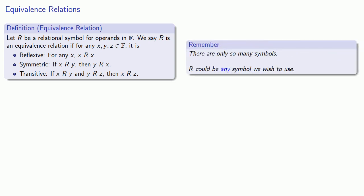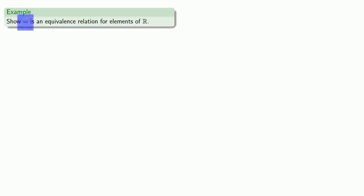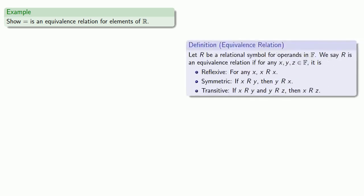It's important to keep in mind there are only so many symbols. While we define equivalence relation in terms of the symbol R, R could be any symbol we wish to use to represent a relation. Our definition of an equivalence relation can be viewed as a set of requirements for entry into a very exclusive club. What we want to do is check the requirements at the door — if a relation meets these requirements, it gets in; if not, it's rejected.